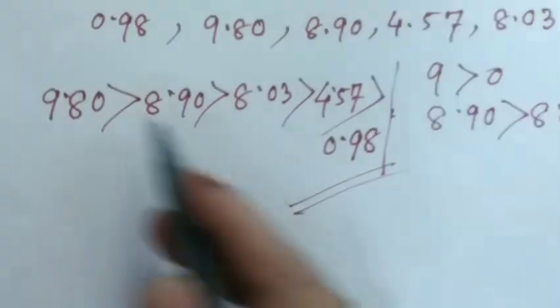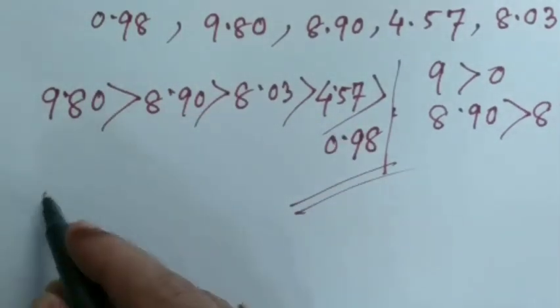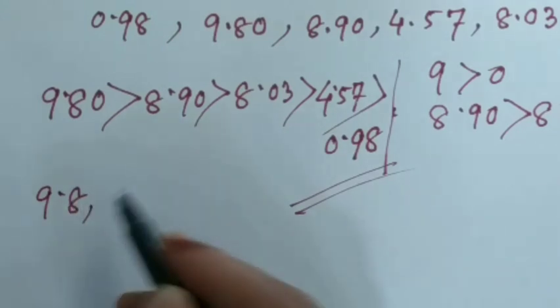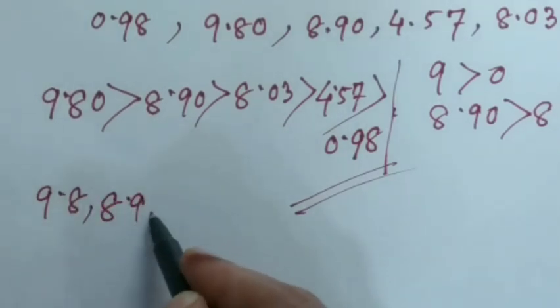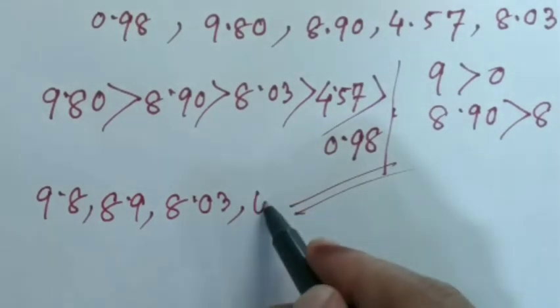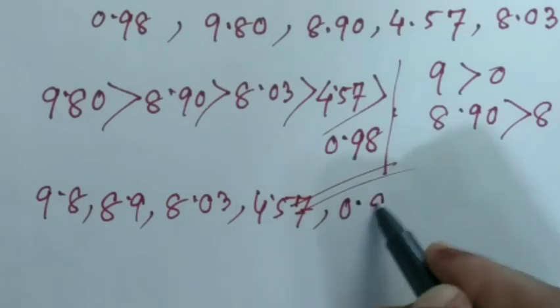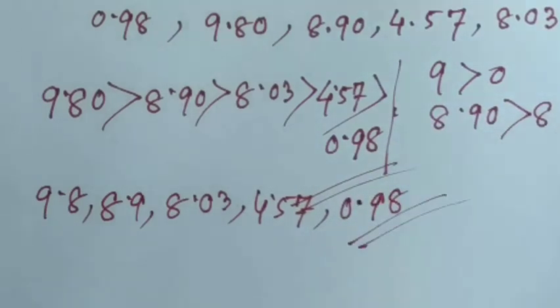Now I am writing original numbers given in the question in this order. So our order will be like this: 9.8, 8.9, 8.03, 4.57, 0.98. This is the final answer.